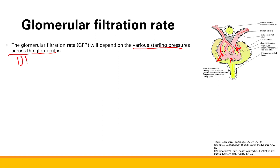Let's talk about how these factors can vary. Hydrostatic pressure in the glomerular capillaries is regulated by the afferent arteriole — which feeds into the glomerular capillary — and the efferent arteriole, which allows blood to exit. The way to remember this is A comes before E, so afferent comes in first, then efferent goes out.